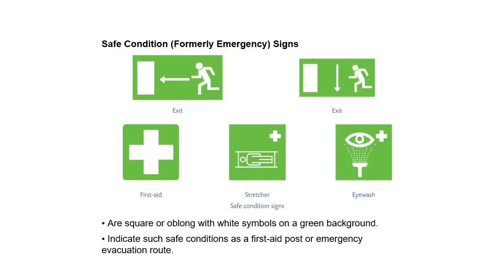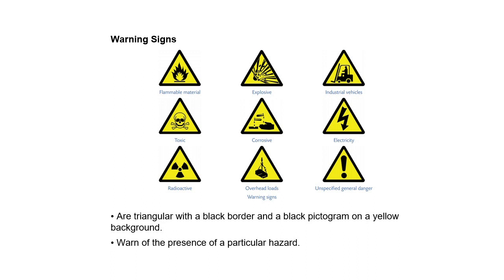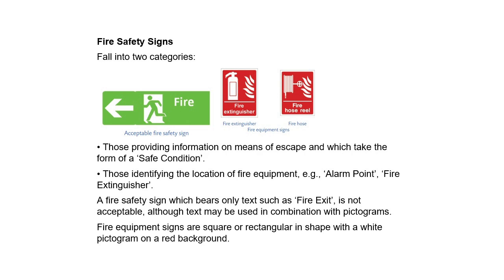Safe condition signs — formerly called emergency signs — are square or oblong with white symbols on a green background, indicating safe conditions such as a first aid post or emergency evacuation route. Warning signs are triangular with a black border and a black pictogram on a yellow background, warning of the presence of a particular hazard.